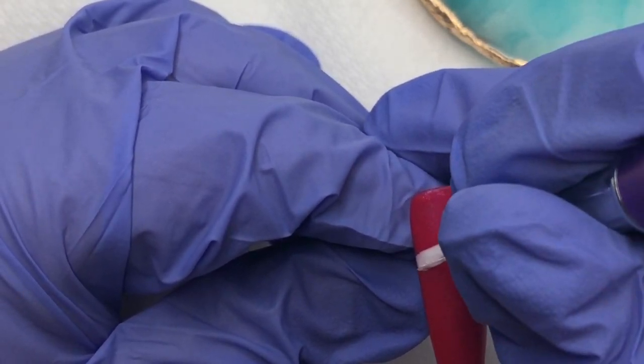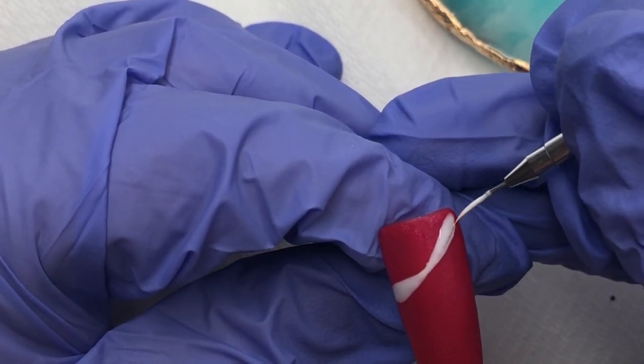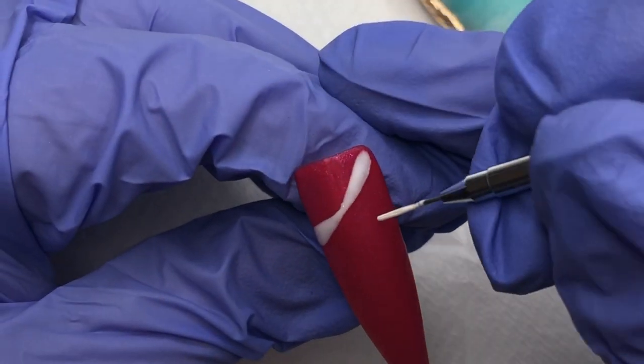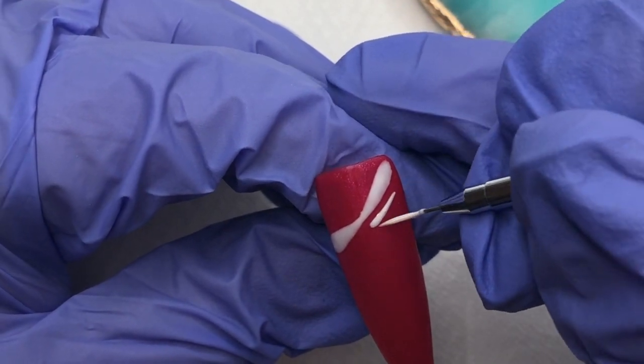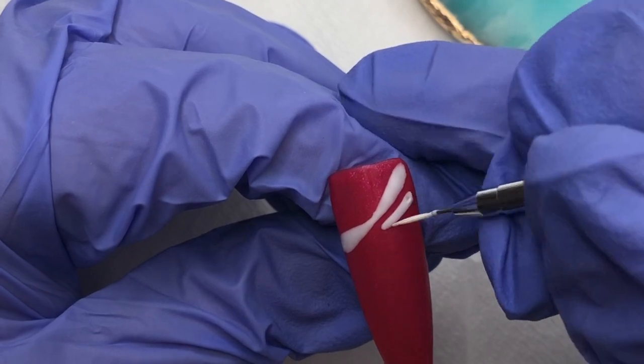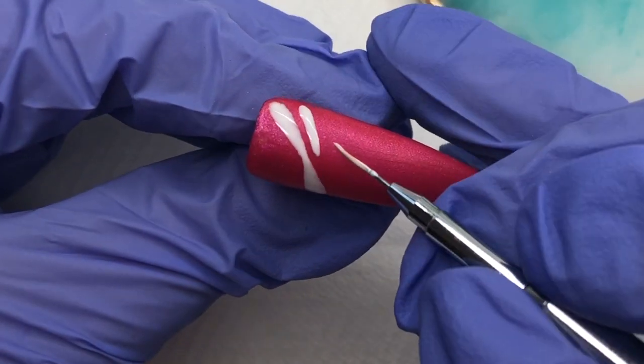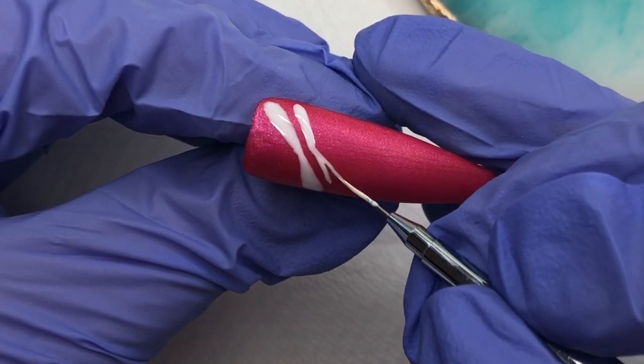And I'll be doubling that up because obviously dragonflies have the sort of the two lots of wings if that makes sense. So I'm just going to be putting two dragonflies on this nail. So this is the first one up near what would be the cuticle area, and then the second one you shall see where I'll put it which is down more towards the tip.